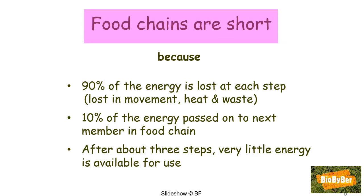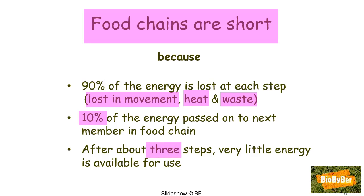Food chains are short because much of the energy is lost as the food chain gets longer. In fact, 90% of the energy is lost at each step. The energy is used or lost in movement, in heat, and in waste. Only about 10% of the energy is passed on to the next member in the food chain. After about three steps, very little energy is available, which is why food chains are generally limited to a maximum of five organisms.